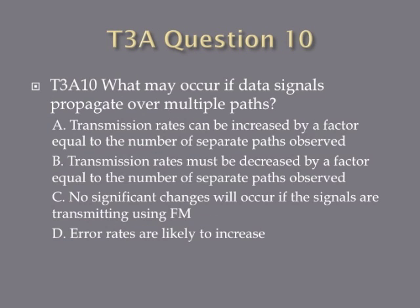Question 10: What may occur if data signals propagate over multiple paths? A. Transmission rates can be increased by a factor equal to the number of separate paths observed. B. Transmission rates may be decreased by a factor equal to the number of separate paths observed. C. No significant changes will occur if the signals are transmitted using FM. Or D. Error rates are likely to increase.